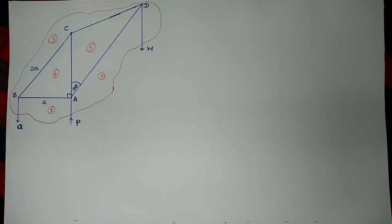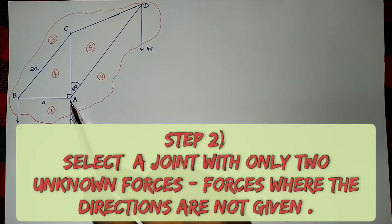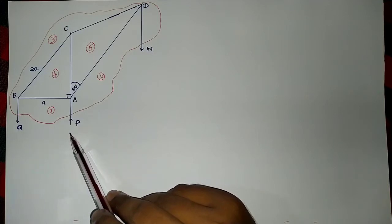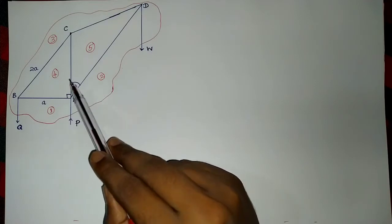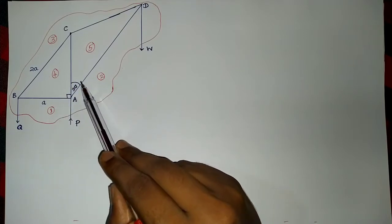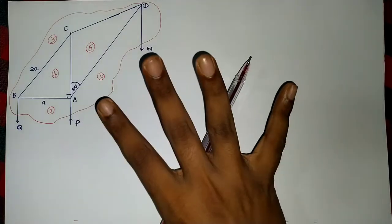The second step is to select a joint with only two unknown forces. Let's start with joint A. Here there is a force moving upwards which is P — its magnitude is unknown. Then we have three rods joining at this point, so the stressors on these rods are unknown. Altogether there are four unknown forces at joint A.